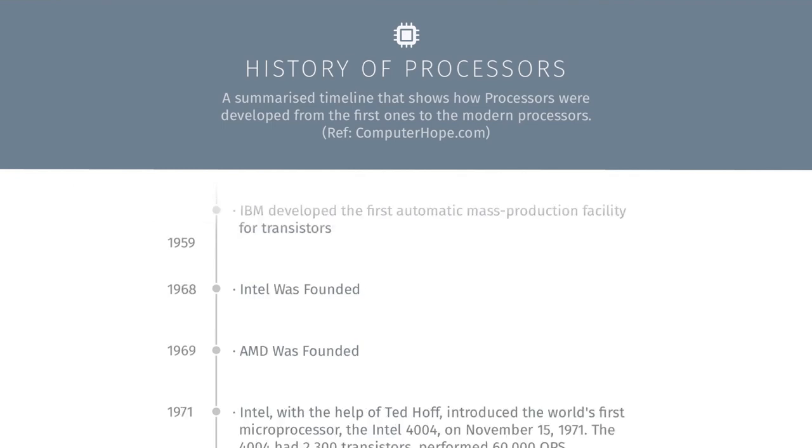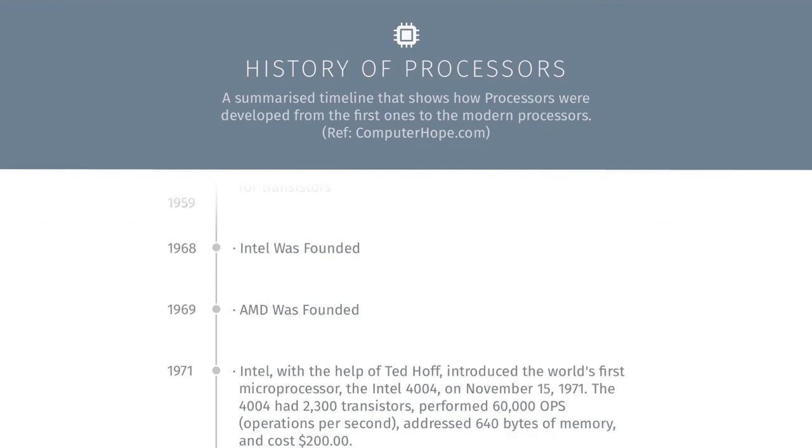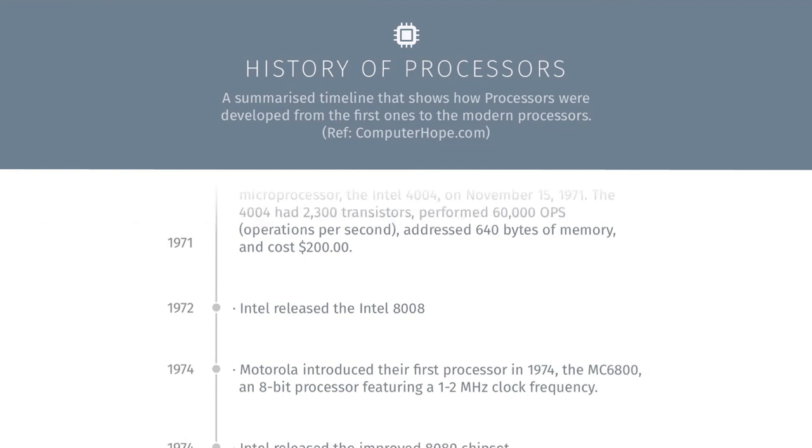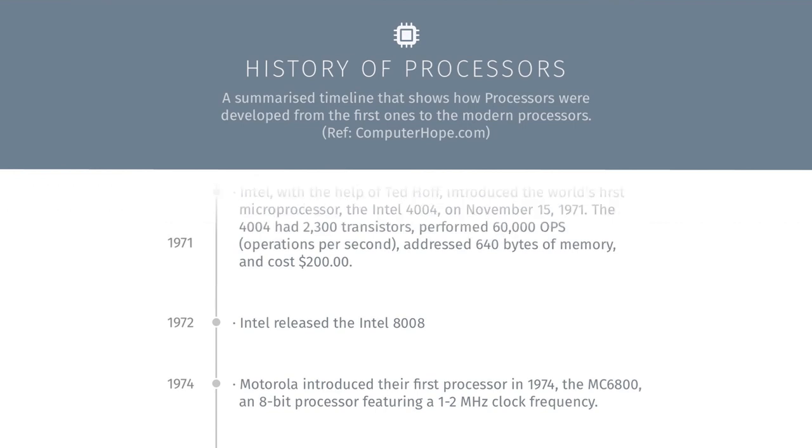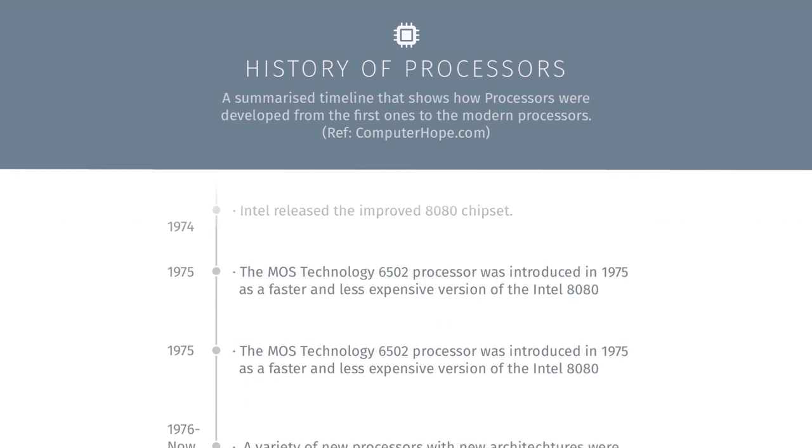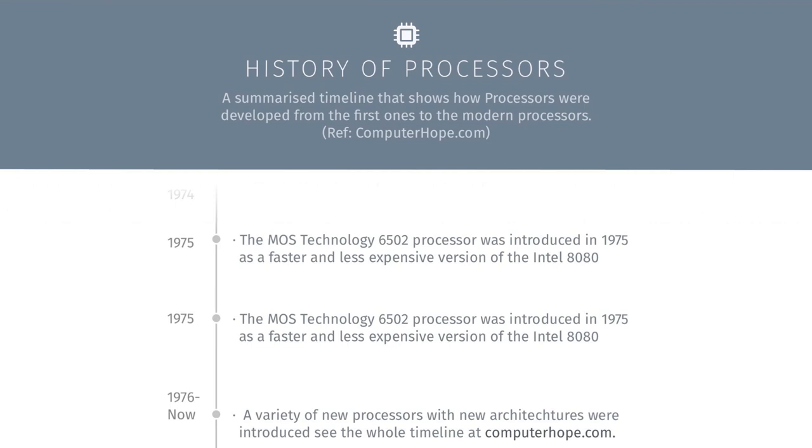This is a big step because we are now mass producing things. In 1968, Intel was founded. Soon later AMD was founded. Then the Intel 4004 came, big step. In 1971, it was the first microprocessor that Intel had launched. It performed 60,000 operations per second until they released the 8008. A year later, Motorola released its own processor. Two years later, Intel went on improving it with the 8080 chipset. The MOS technology was then founded in 1975.